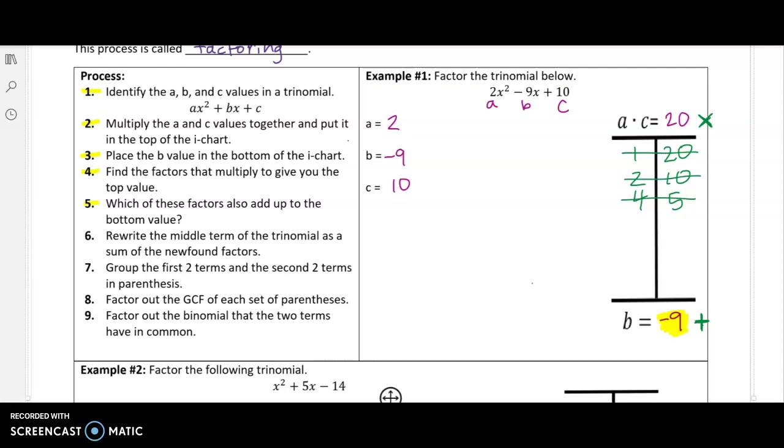How do we get a negative value? Well, if they're multiplying to give us a positive 20, then maybe a negative times a negative also gives us a positive. So what about negative one and negative 20? Negative two times negative 10 and negative four times negative five. Now which of those adds up to negative nine? This pair right here. So those are our factors.